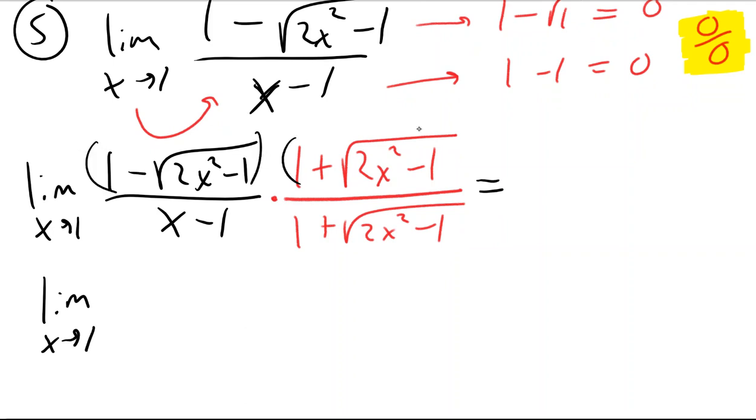And that is kind of messy. But when we multiply our numerators together and FOIL these, the first part of FOIL is 1 times 1. The outer part of FOIL is going to be the square root of 2x squared minus 1. But then the inner part of FOIL is going to be minus the square root of 2x squared minus 1. So those are always going to cancel.